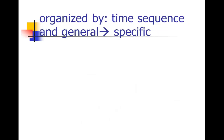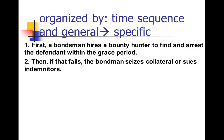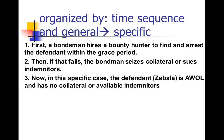Notice that they go in logical time sequence order — first this happens, then this happens. They also do a general to specifics. First, a bondsman hires a bounty hunter to find and arrest the defendant. Then, if they're unable to find and arrest the defendant, the bondsman will seize the collateral or sue the indemnitors. There's an order to these things. There's also a general-to-specific here, because that's the general case — just telling you how this whole process works, in case you don't know.